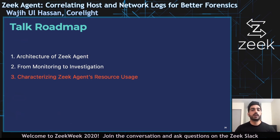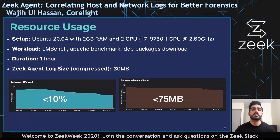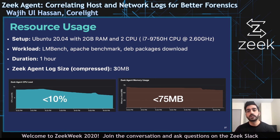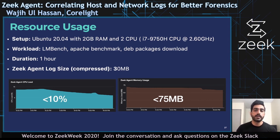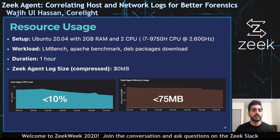Finally, I will discuss the cost of running Zeek Agent on your system. To measure resource usage, we used a VM with two gigabytes of RAM and two CPUs, and simulated several real-world workloads using standard benchmarks such as LMBench and Apache Benchmark. During this one-hour engagement, Zeek Agent produced around 30 MB of compressed logs. We found that resource usage was quite low even under these extreme workloads — CPU usage remained under 10% while memory usage stayed below 75 MB.